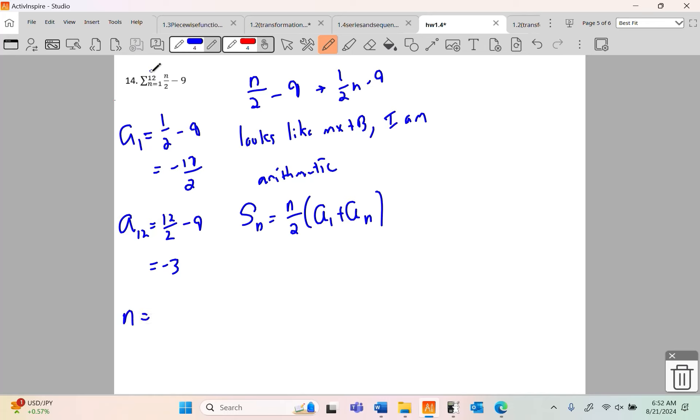And how many things are there? The number of things is the high number, 12, take away the low number 1, which is 11 things. Oh, we've got to add one back. It seems silly that I'm going over this, but there's a reason for that. There's 12 total things. So I'm going to find the sum of 12 things. It's 12 over 2. First term is negative 17 halves. The last term is negative 3, which I'm going to write as negative 6 halves.